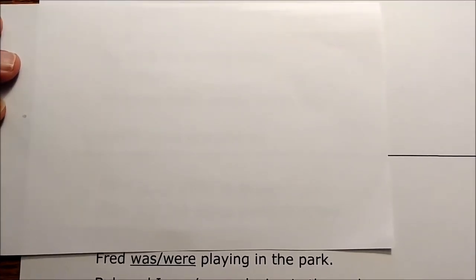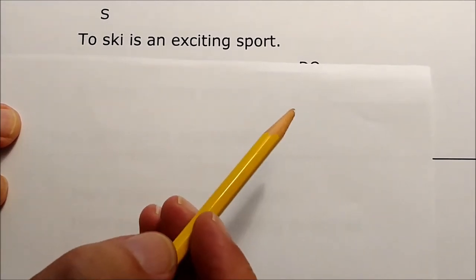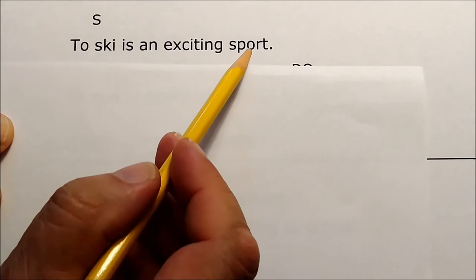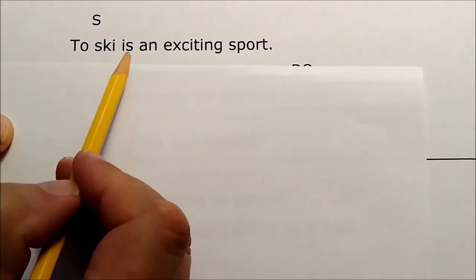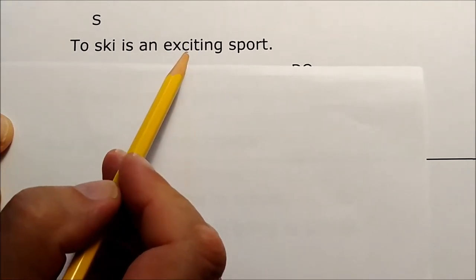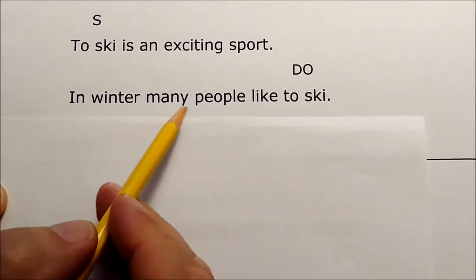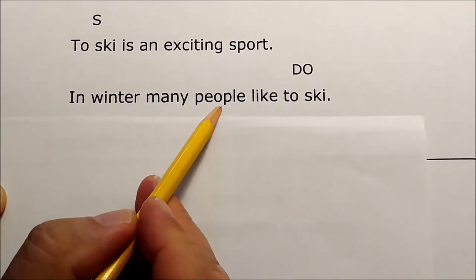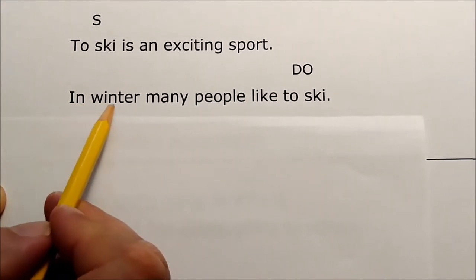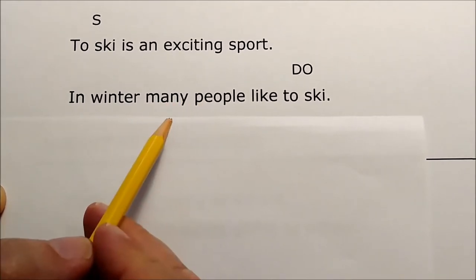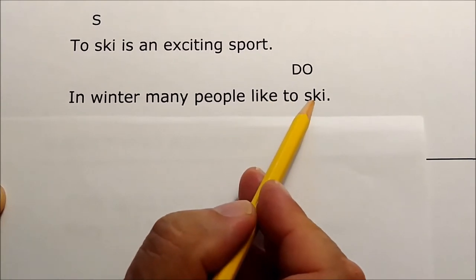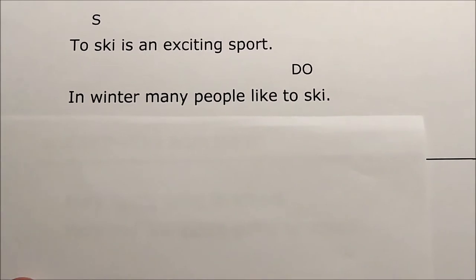For those who like to ski: 'To ski is an exciting sport' — 'to ski' is the subject, 'sport' is the subject equivalent, 'is' is the verb, and 'exciting' is an adjective describing sport. But in 'In winter, many people like to ski,' 'people' is the subject, 'in winter' is a prepositional phrase, 'many' is an adjective describing people, 'like' is the verb, and 'to ski' becomes the direct object. So the infinitive forms of verbs — to ski, to eat, to hunt — can be used as subjects or direct objects.